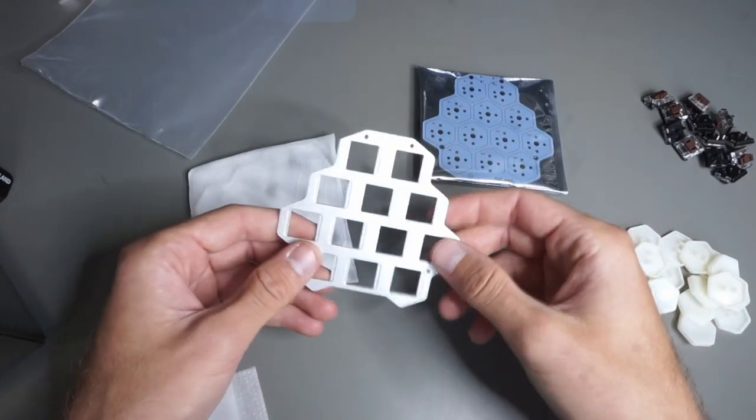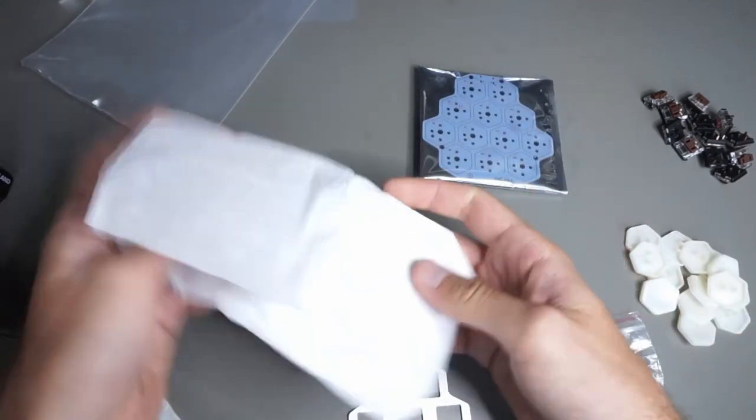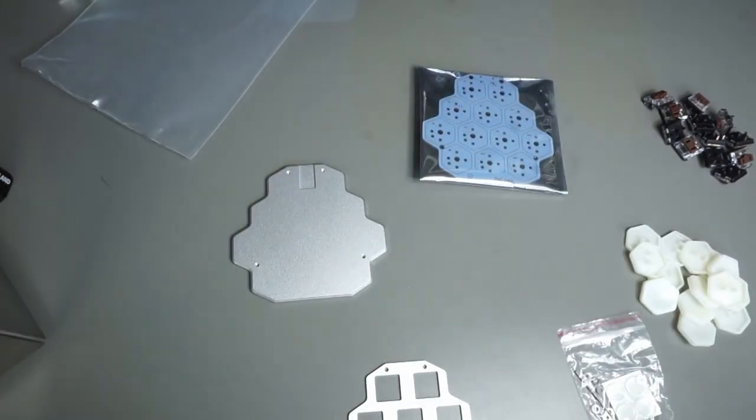The top plate is the thinner one. And lastly there's also the bottom plate, which is wrapped in an extra layer of paper for protection.